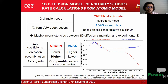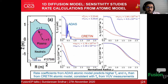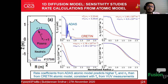We replaced the CRETIN atomic data in the 1D diffusion code with ADAS to see if it becomes consistent with the VUV spectroscopy estimates. When using rate coefficients from ADAS, the 1D diffusion model predicts a much higher temperature — around 17 eV in the center compared to ~3 eV predicted by CRETIN — and also predicts much higher electron density. This temperature predicted using ADAS atomic data is consistent with the temperature estimated from VUV measurements.